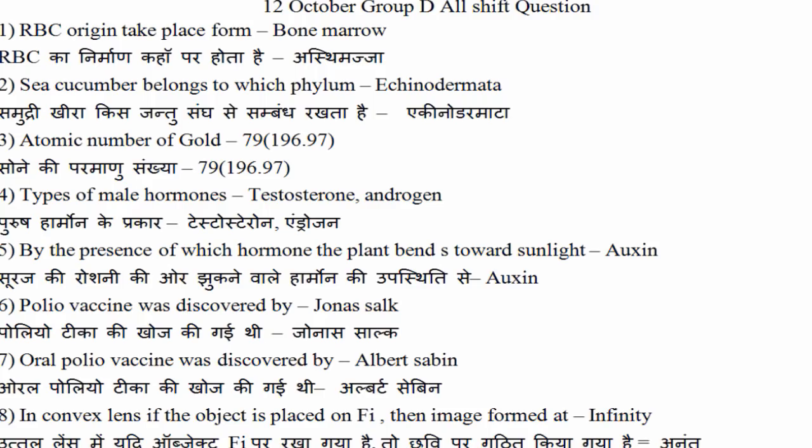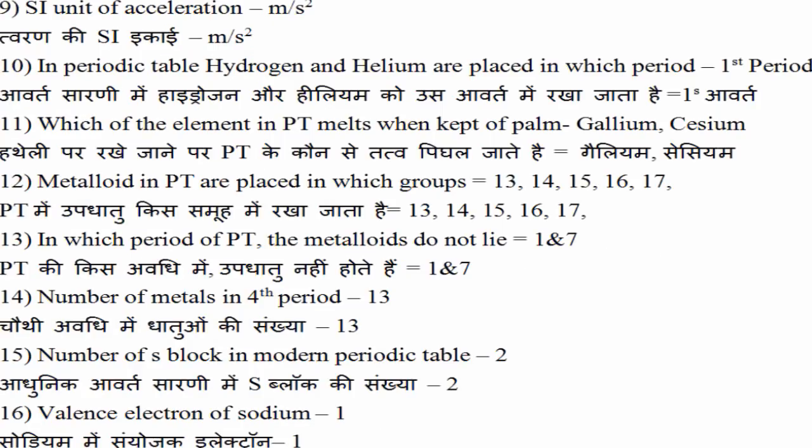10वाँ question आपका meter per second रहेगी. और आगे के सारे questions periodic table से जिस तरीके से पूछे गए हैं वो सारे हैं. तो 10वाँ question आपका है कि hydrogen और helium periodic table में कौन से आवर्त में रखी जाती है — तो पहला period आपका correct है.